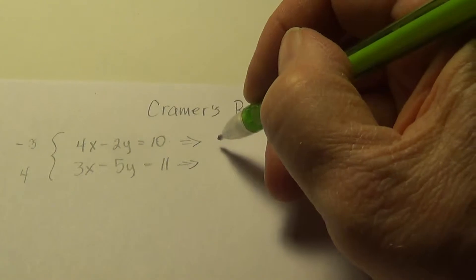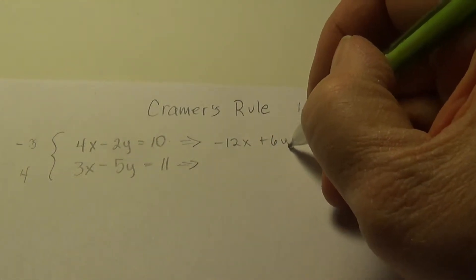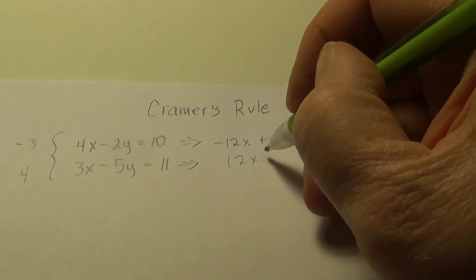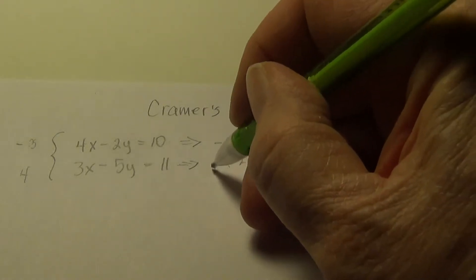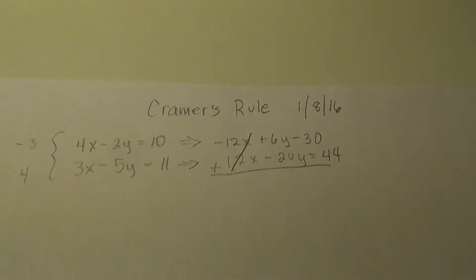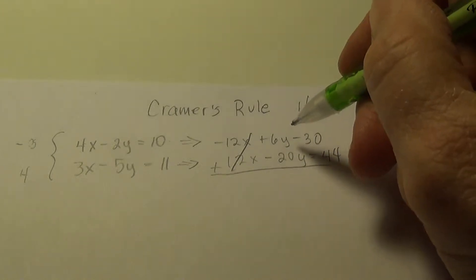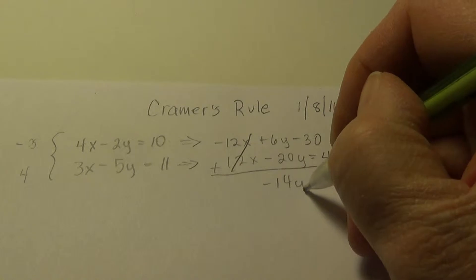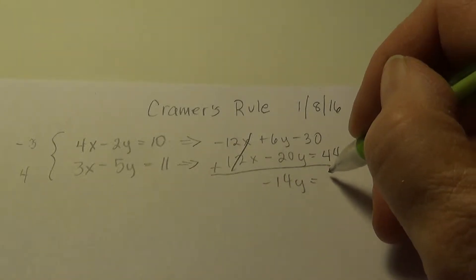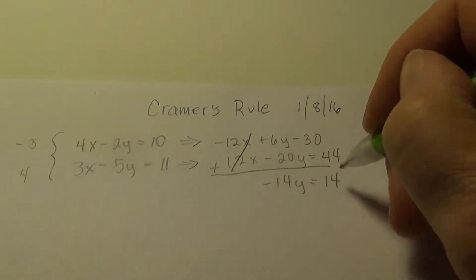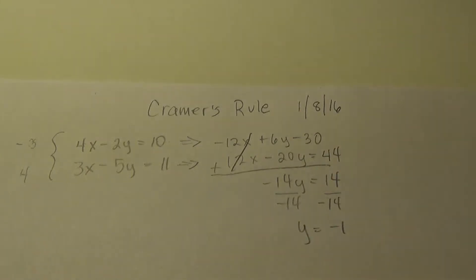So if I multiply this whole thing by minus 3, I get negative 12x plus 6y minus 30. And the bottom one, I get 12x minus 20y equals 44. And when I add those two equations, I eliminate the x terms, thus the term elimination. And negative 20 plus 6 is going to be negative 14y, negative 30 and 44 is positive 14, divide, and I get y equals negative 1.